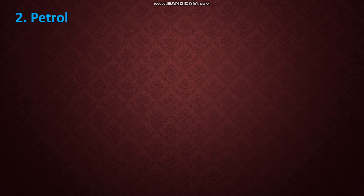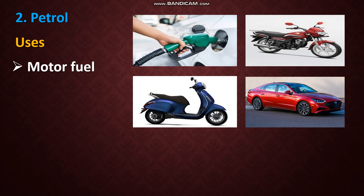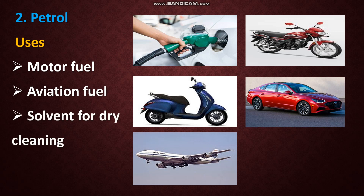The next constituent is petrol. It is used as motor fuel — petrol is used for light vehicles like motorcycles, scooters, and cars. It is also used as aviation fuel, that means fuel for aeroplanes. One more use: it is used as a solvent for dry cleaning. Dry cleaning is where grease and oil stuck in our clothes cannot be removed by washing with water, so other solvents — including petrol — are used.